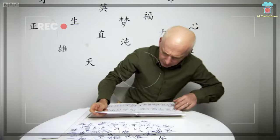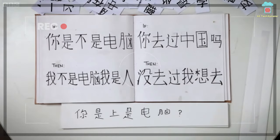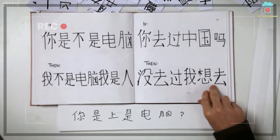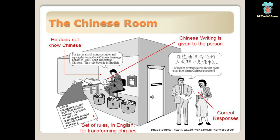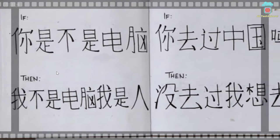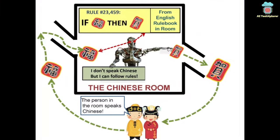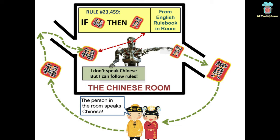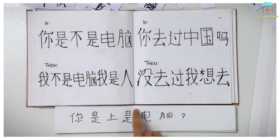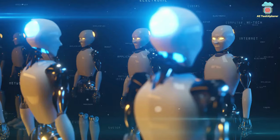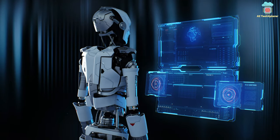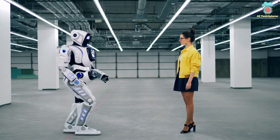The argument goes like this: imagine a person who doesn't understand Chinese is placed in a room with a set of instructions for manipulating Chinese symbols. The person receives questions in Chinese and, by following the instructions, produces answers in Chinese indistinguishable from those of a native Chinese speaker. However, the person does not actually understand Chinese — they are simply manipulating symbols according to a set of rules. Although the Chinese Room Argument doesn't provide a definitive test for human-level AGI, it raises important questions about the nature of consciousness, understanding, and the limits of AI.